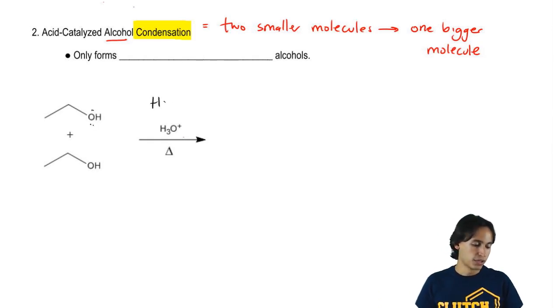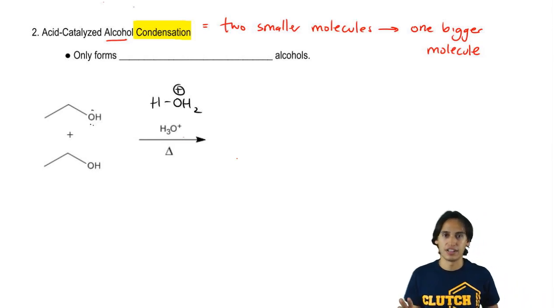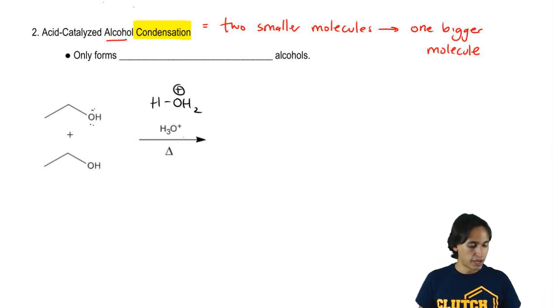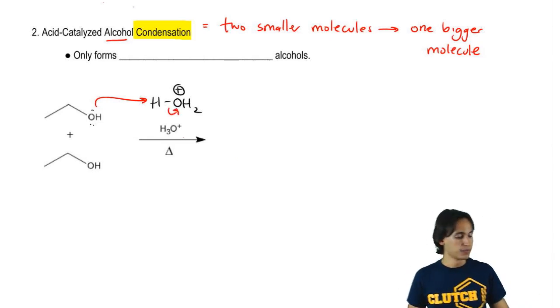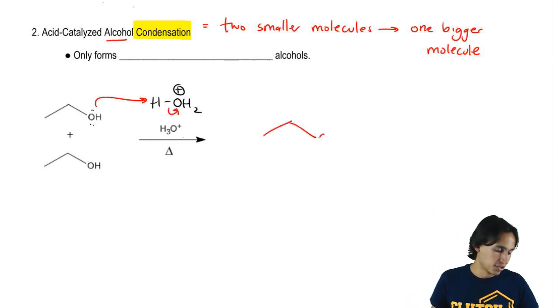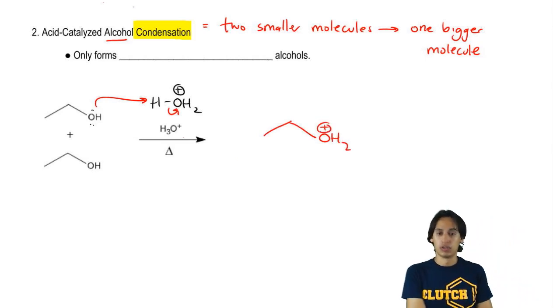I've got my H3O plus that I'm going to write like this because it's easier to deprotonate that way. Same thing as H3O plus, I'm just writing it a little bit different. So my OH is going to grab an H from the acid and what I'm going to wind up getting is something that looks like this. I have a protonated alcohol now.